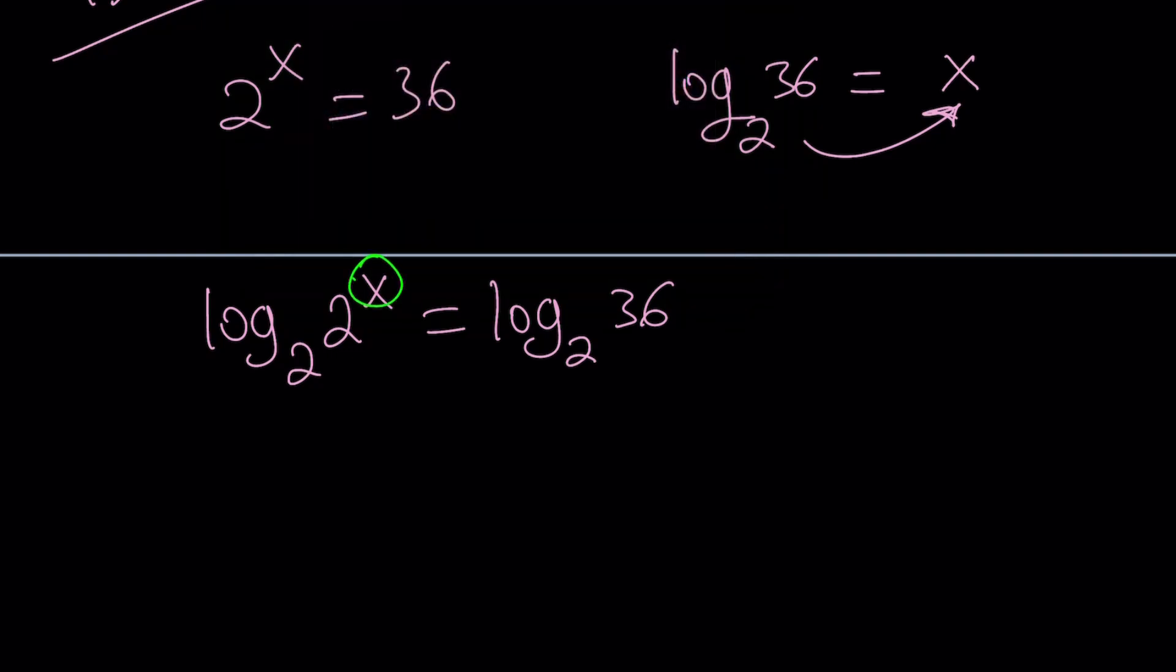So now you can move the x to the front, getting log 2 with base 2, which is 1. So this is going to become x equals log 36 with base 2. Awesome. So we've got a value of x. So if you have a calculator, you can go and evaluate it, but don't do it because we want the exact answer. And this is the exact answer. If you use a calculator, it's going to approximate it. So it's not going to be exact.